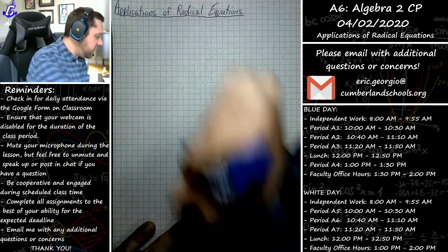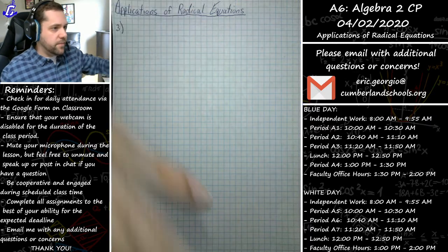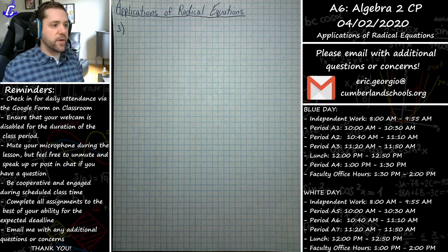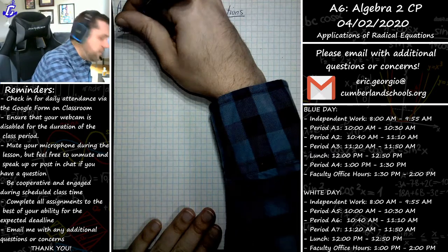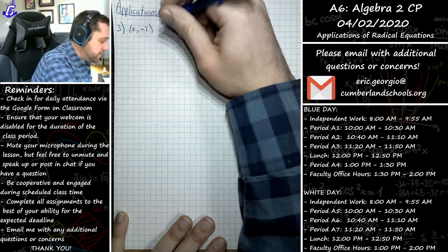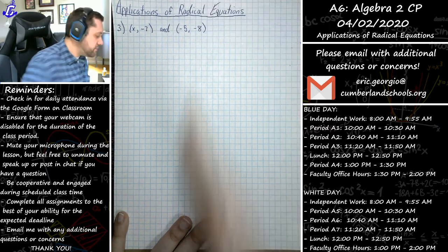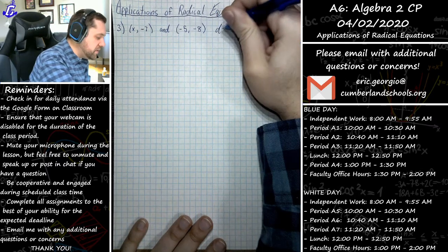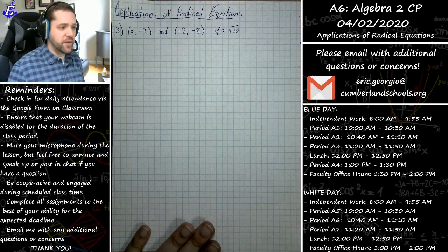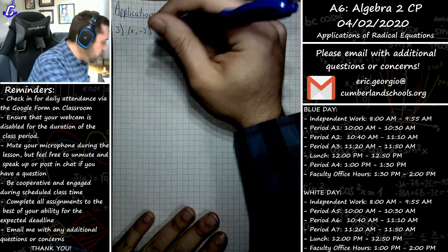Let's go ahead and get started with problem number three. Problem number three gave us two points: x comma negative seven, and negative five comma negative eight. It also told us that the distance between those two points was the square root of 10 units, and we were tasked with figuring out what missing x-coordinate can satisfy that equation.